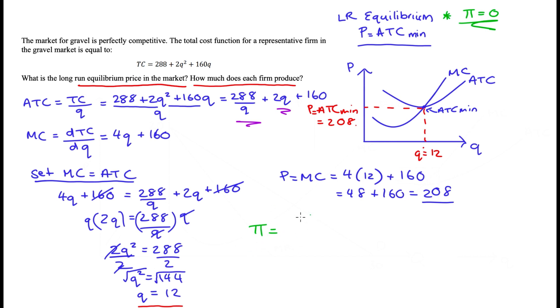But let's go ahead and check this profit. Profit is total revenue minus total cost. Total revenue is price times quantity, and total cost—we have our total cost function here—so I'm just going to leave that as is and use that total cost function. And we can evaluate this at q equals 12 and at P equals 208. So I get 208 times 12, that's our total revenue,